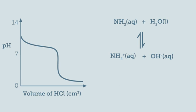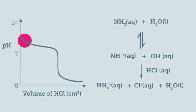As you add the hydrochloric acid solution, the pH initially decreases quickly. This is because the hydroxide ions already produced by the ammonia in water are neutralized by the hydrogen ions from the strong acid.